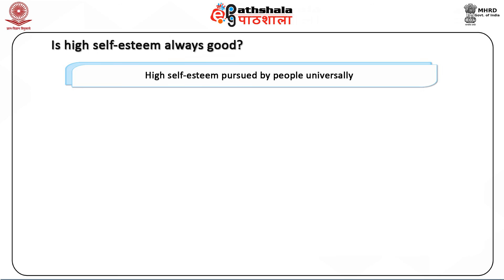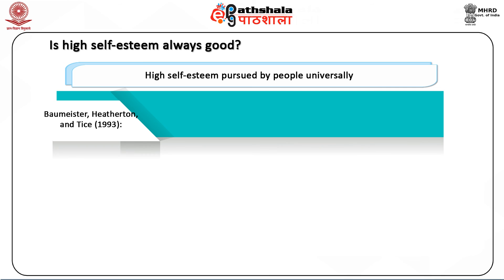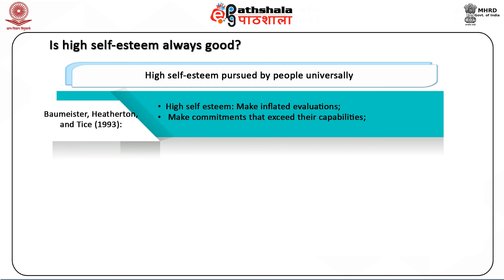Given the importance of high self-esteem as demonstrated in numerous studies, it is generally assumed that high self-esteem is always desirable and produces positive results. However, many studies have shown this is not always the case. Burmeister, Heatherton and Tice reported that the tendency for people with high self-esteem to make inflated evaluations and predictions about themselves may lead them to make commitments that exceed their capabilities, thereby leading to failure. Their results showed the dangers of letting egoistical illusions interfere with self-regulation processes.